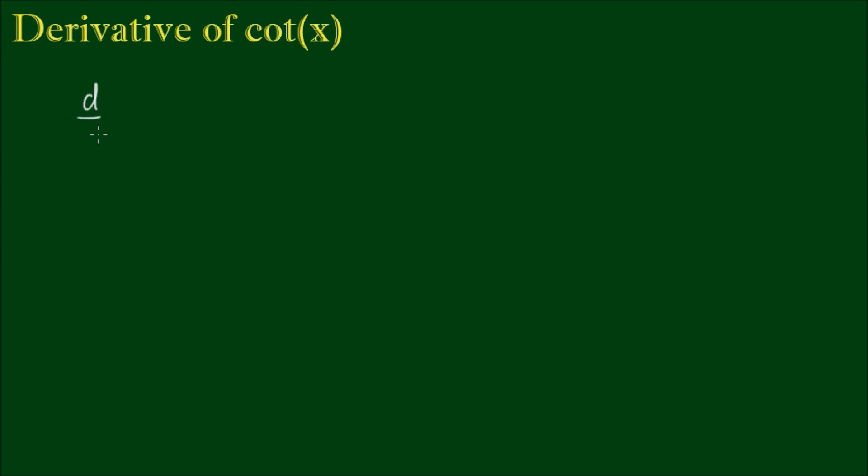Let's have a look at the derivative of the cotangent of x. Now the cotangent is defined as the reciprocal of the tangent. And the tangent has a quotient identity of the sine over the cosine. So it follows then that the cotangent, being the reciprocal of that, would be the quotient of the cosine over the sine.